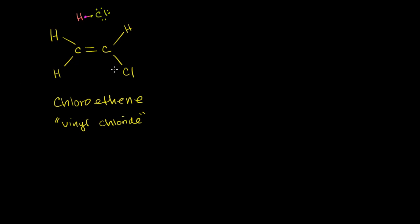Let's say we have some chloroethene here. You wouldn't have to call this 1-chloroeth-1-ene, because if you just go with chloroethene, there's only one way to draw this. The common name for chloroethene is vinyl chloride. So let's say we have a bunch of chloroethene molecules mixed with some hydrogen chloride. I've drawn all the valence electrons for the chlorine atom, and I've drawn a little magenta electron — the one that the hydrogen atom brought to the table. So we've seen something like this before. What is likely to happen?